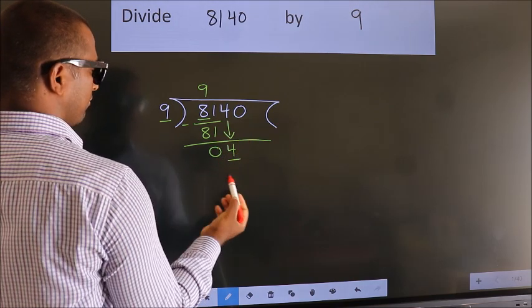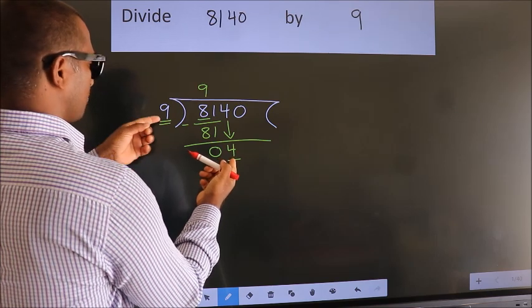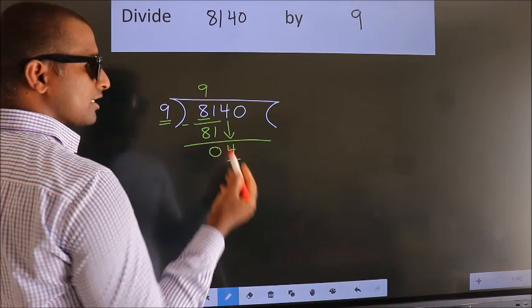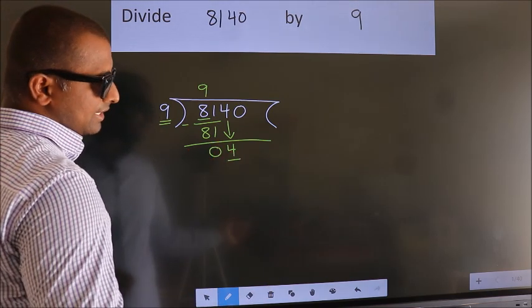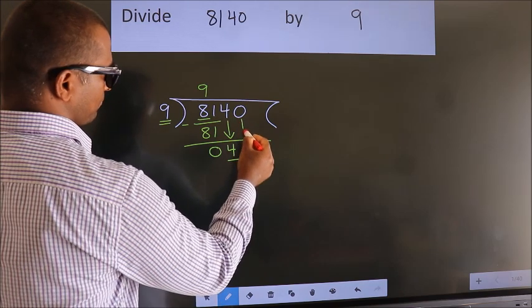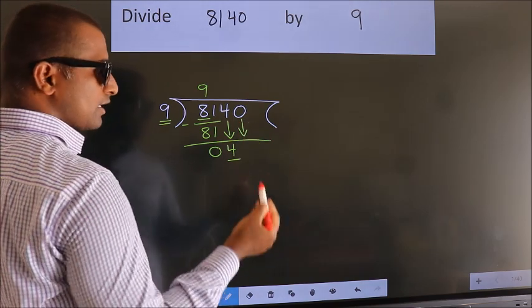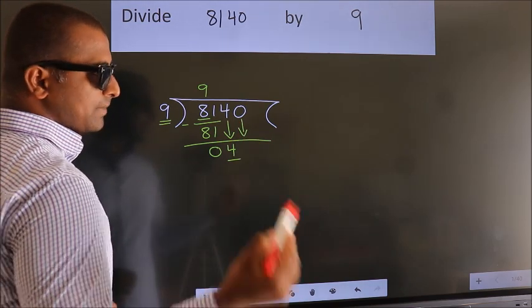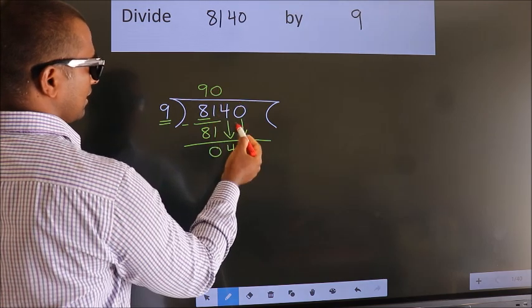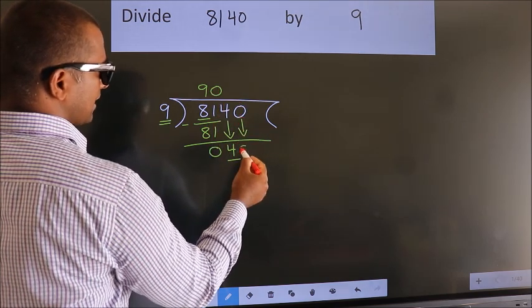Here we have 4, here 9. 4 smaller than 9, so we should bring down the second number. And the rule to bring down second number is, put 0 here. Then only we can bring down this number.